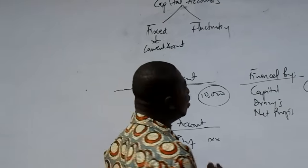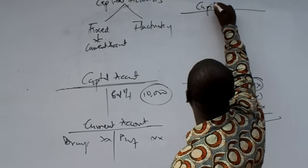The second type is a fluctuating capital account. In this case, we don't care whether the capital account is changing. If the capital balance is 10,000, we still add profits — say 1,000 — and deduct drawings of, say, 500, giving a closing balance of 10,500. Next year it will change again. The capital account does not remain fixed; it is always changing. A fluctuating capital account does not need a current account in addition.